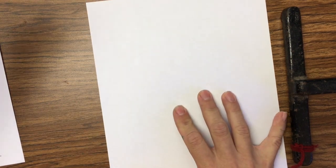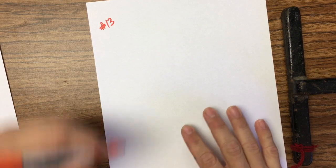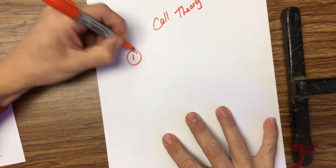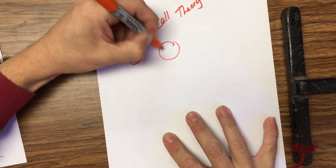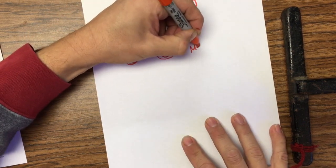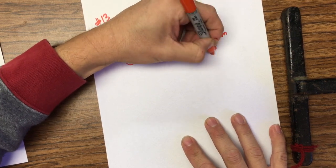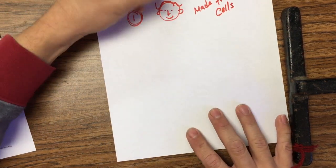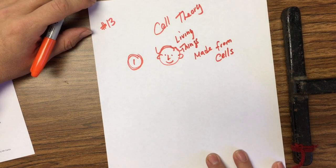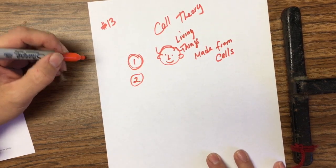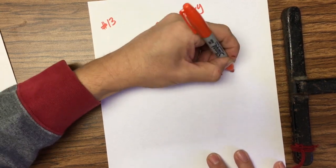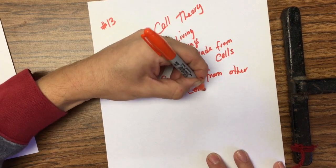Question number 13: cell theory. Remember the components. Number one: all living things are made from cells. Number two: cells come from other cells.